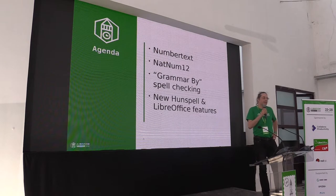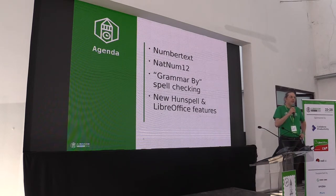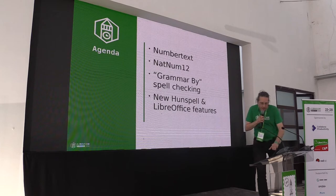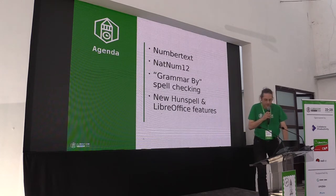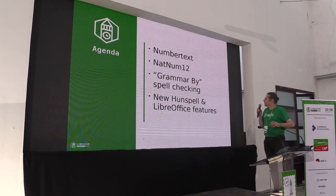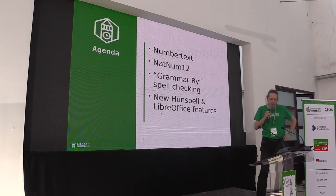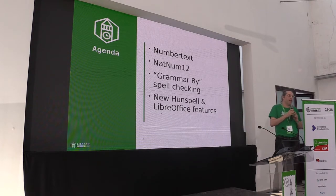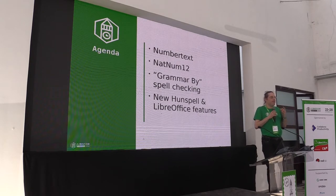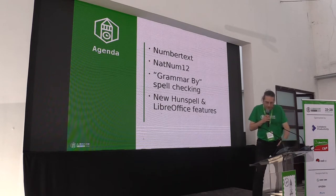Grammar and spell checking is mostly important for languages with rich morphology — a lot of affixes and suffixes. English is not that type of language, but about half of the languages of the world are in this category. There was one special development in Hunspell and some interesting improvement especially for languages with complex morphology in LibreOffice. My aim here is to encourage everybody to extend the features of LibreOffice in the direction of their language.